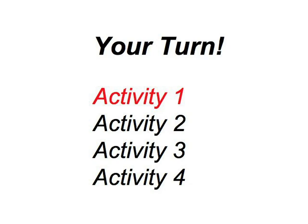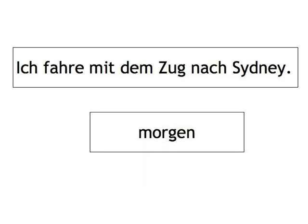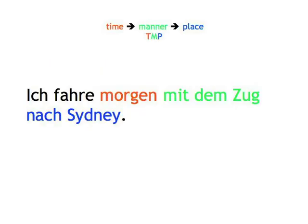We'll give you, for example, 'Ich fahre mit dem Zug nach Sydney.' Then 'Morgen.' And you'll have to add morgen by recasting the sentence: 'Ich fahre morgen mit dem Zug nach Sydney,' according to the time, manner, place rule. For the moment, we'll put these elements towards the end of the sentence, not in the first position.